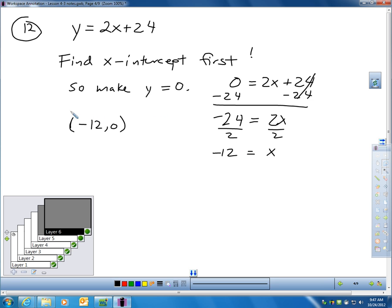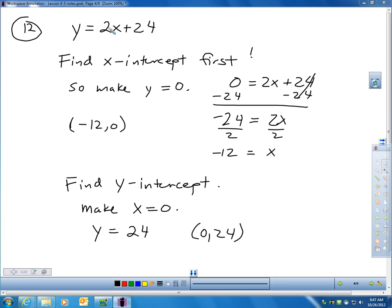So (-12, 0) is my X intercept. That's where my graph crosses the X axis. Now I've got to find the Y intercept. Well, that means I've got to plug in 0 for X. Because remember, the Y intercept, x is always 0. So if I plug in 0 for X, I get y = 0 + 24. That means y = 24. There's my Y intercept.